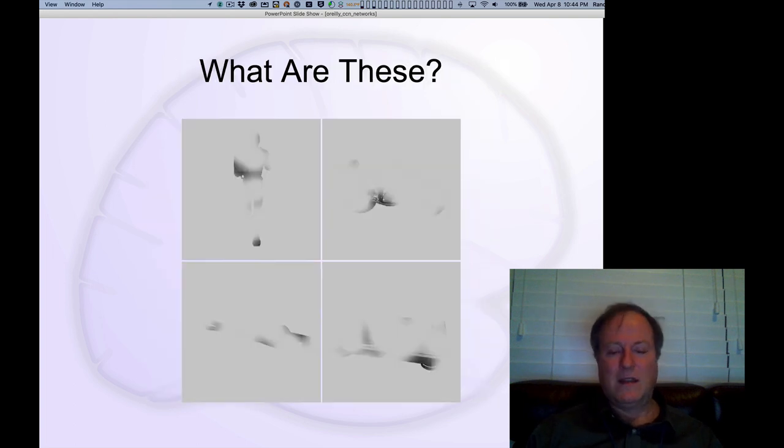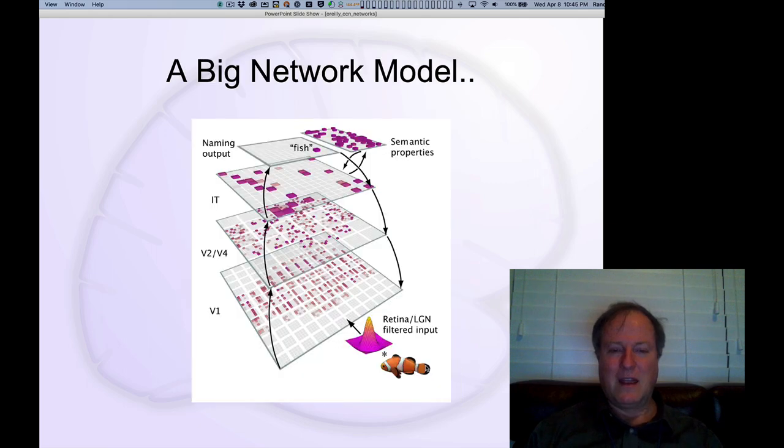This is an example of stimuli that we showed to a particular model that's a more advanced version of the model we'll look at in chapter six that does object recognition using these bidirectional connections. What we've done is occluded different parts of these visual objects. This you might recognize as the back view of a person, maybe you could see this as a motorcycle. People didn't really have a lot more trouble with this one, it's actually a plumber's wrench. And this one people really have trouble with, it's an old-fashioned turntable.